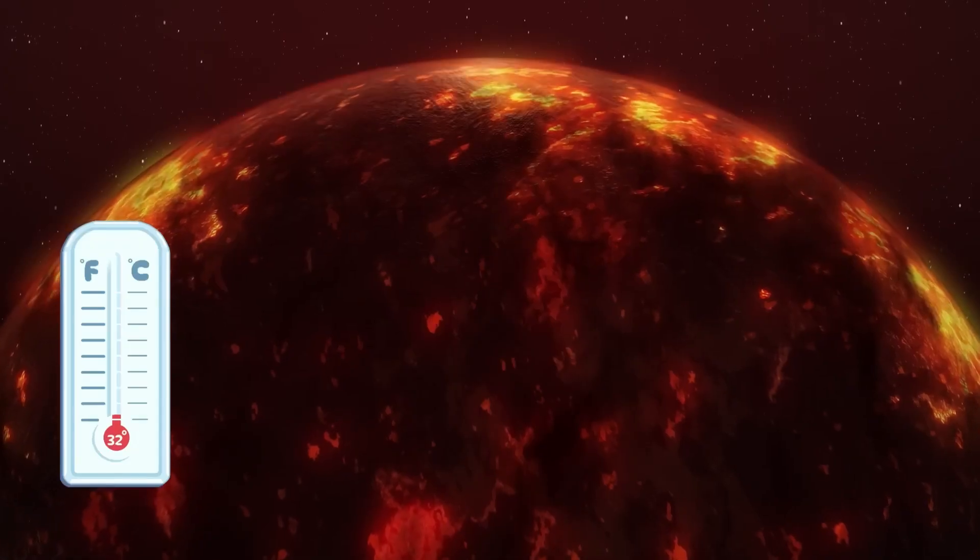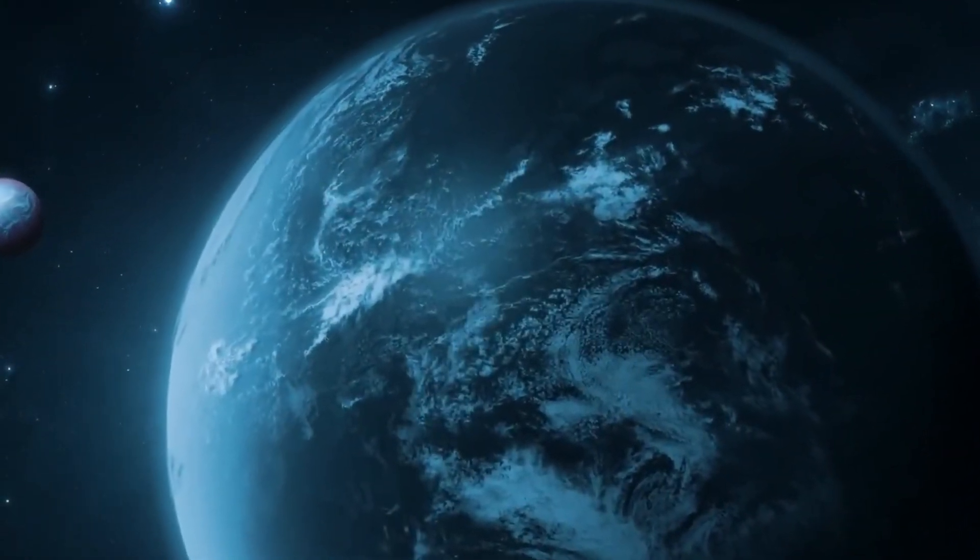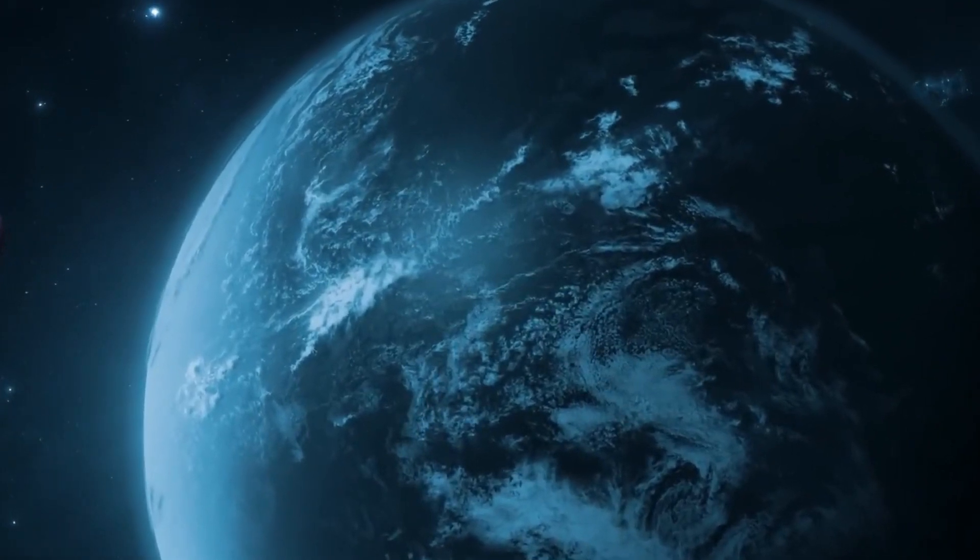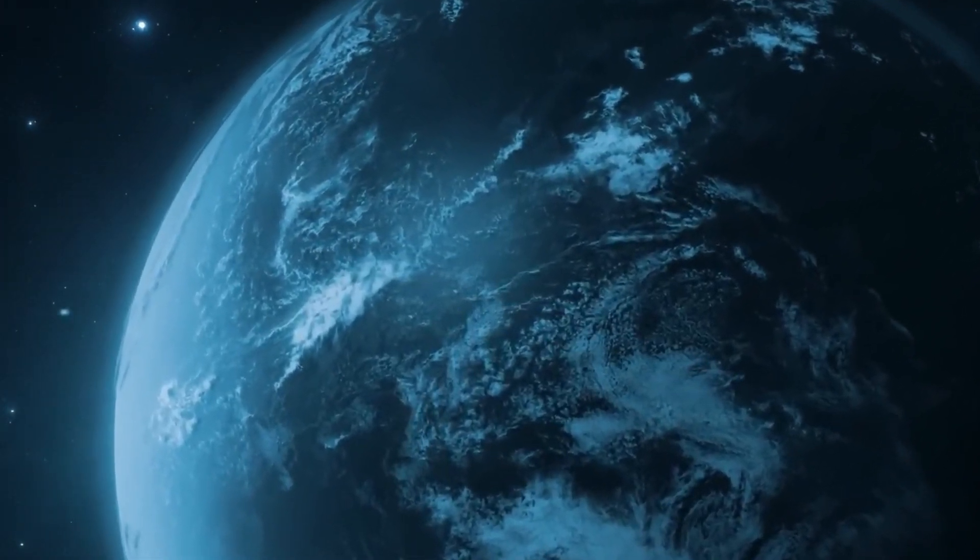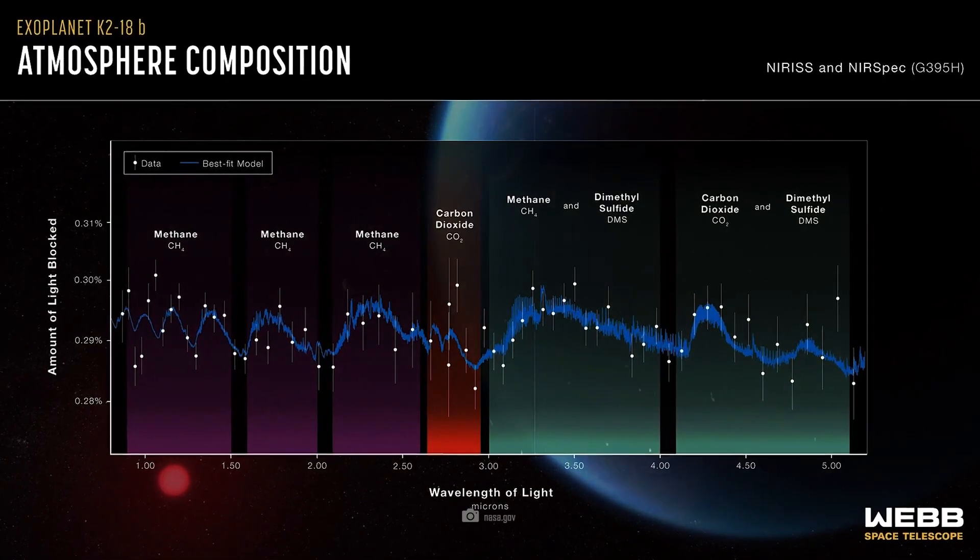In the case of K218b, we have a promising mixture. The planet is medium-sized with a surface that is presumably solid. In depth, Webb found traces of water, methane, carbon dioxide, and DMS in the atmosphere.